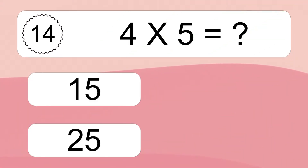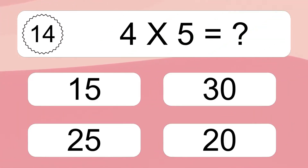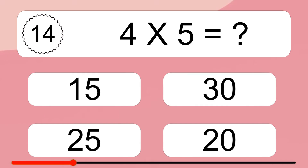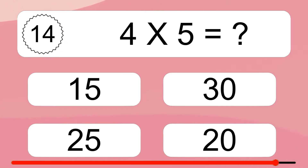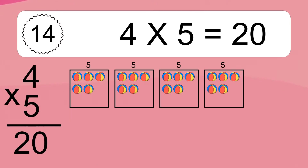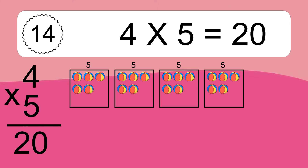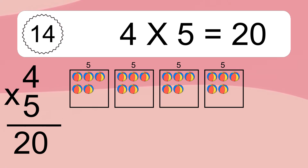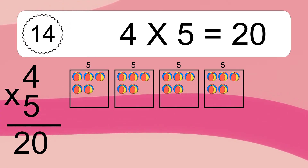4 times 5 equals what? 4 times 5 equals 20. We have 4 boxes, and each box has 5 colorful balls inside. If you count all the balls in all the boxes together, you will have 4 times 5 balls. This equals 20 balls.